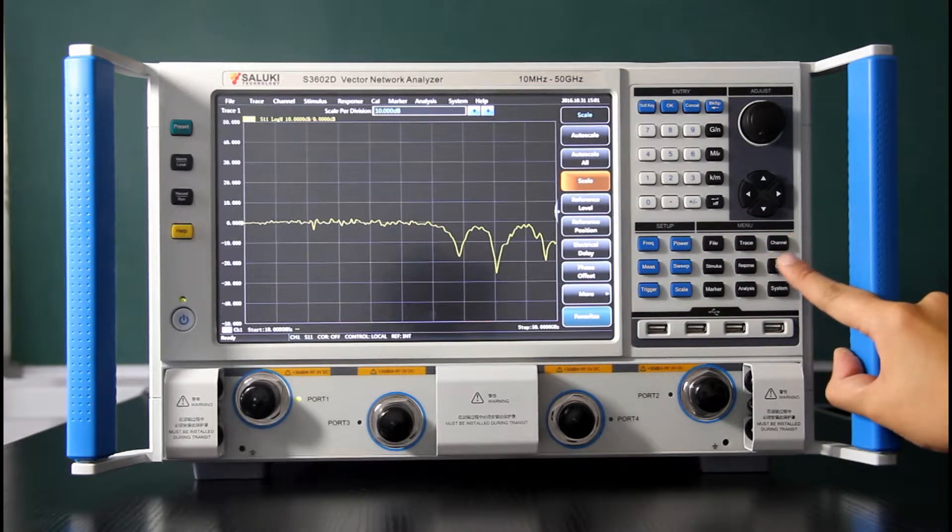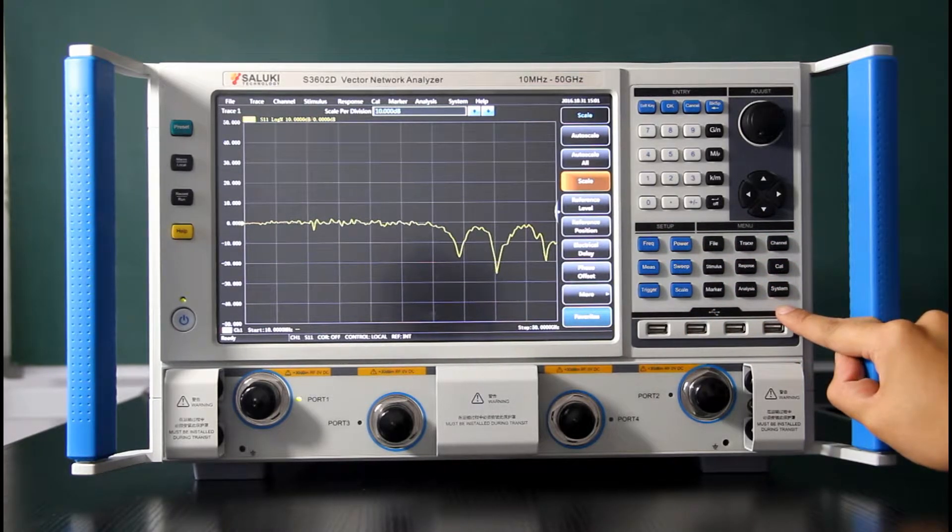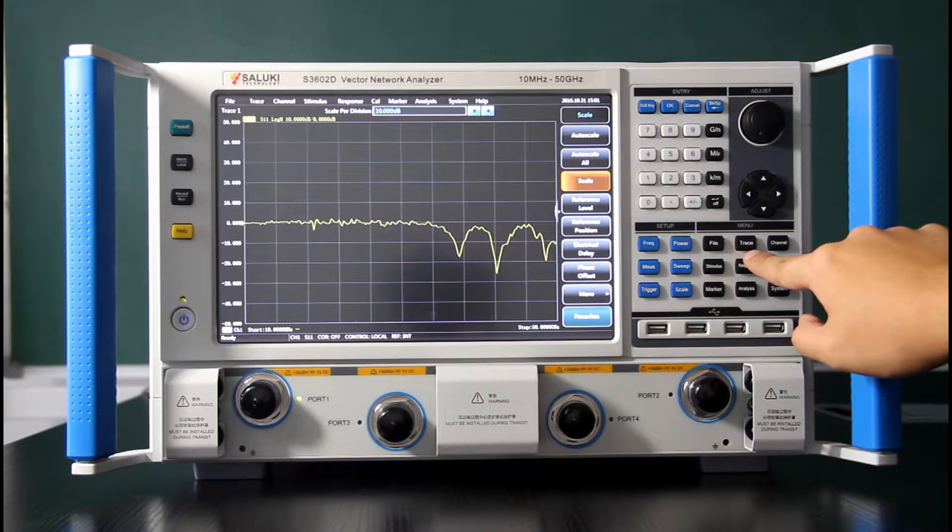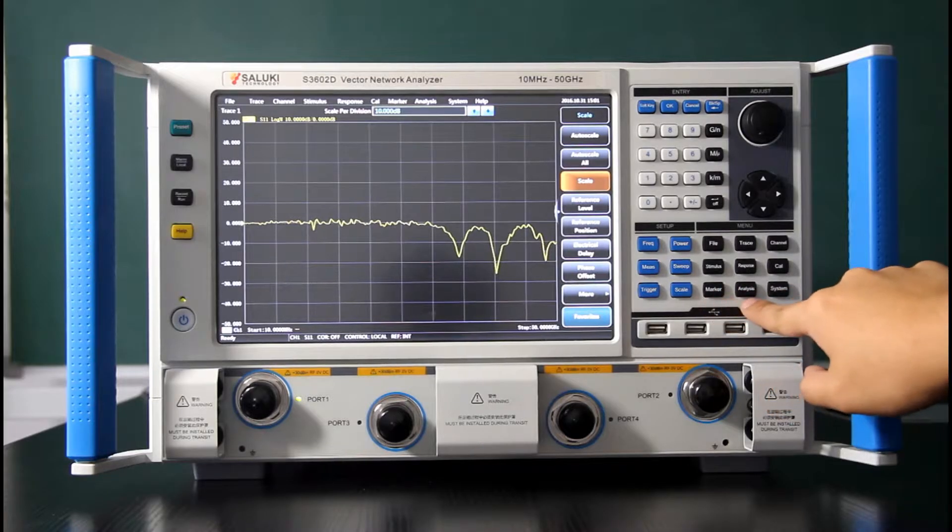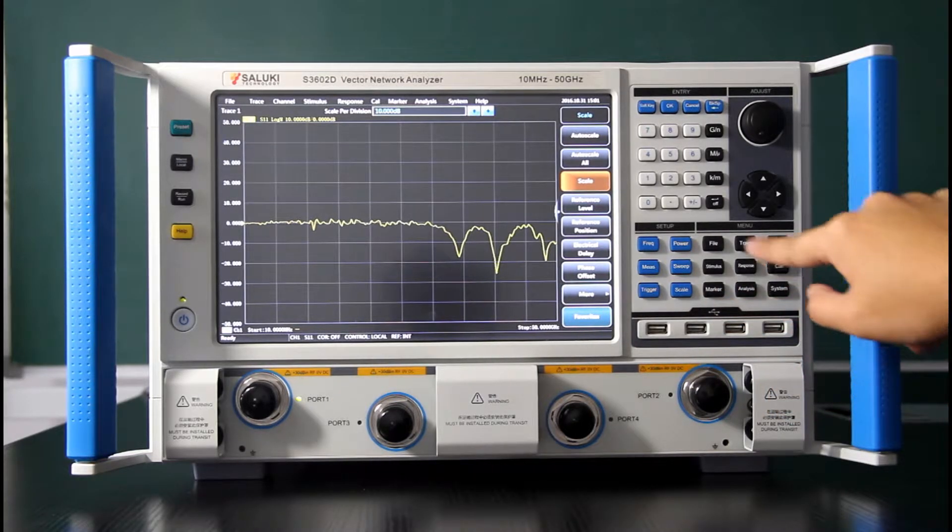After the setup key zone, we will show you the menu zone. The menu zone have nine keys. There are file, trace, channel, stimulus, response, calibration, marker, memory, and system.